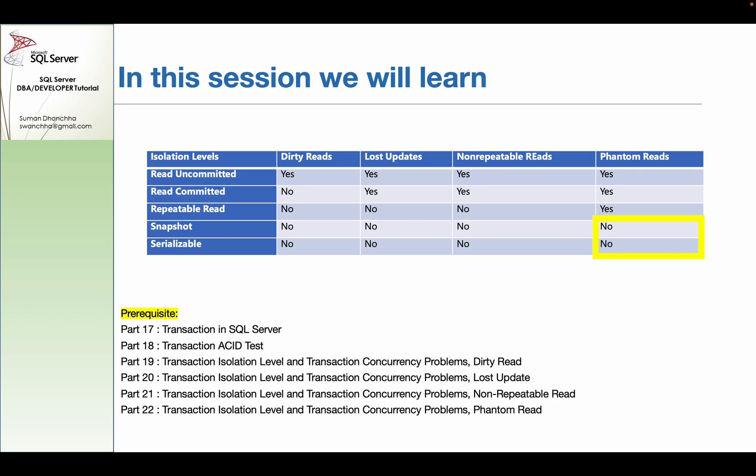In Snapshot isolation, we can implement a lock. The other information is versioned — we can maintain your version. This versioning is made of committed data; the data is maintained through changes, updates, and commits.